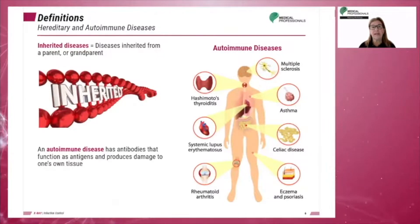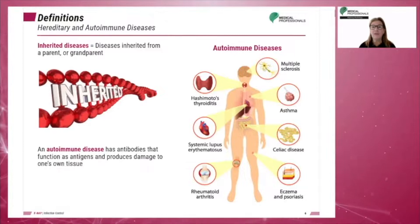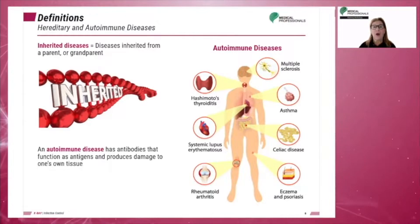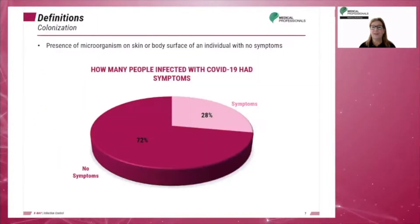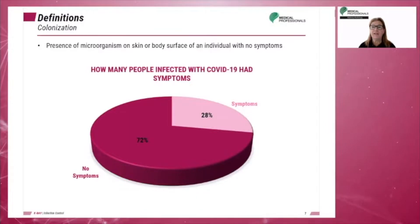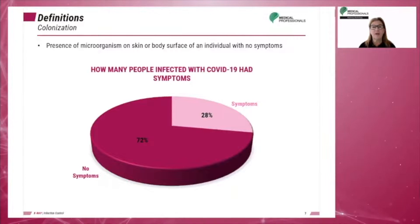Diseases can be inherited from a parent or grandparent — these are inherited diseases. An autoimmune disease has antibodies that function as antigens and damage one's own tissue; rheumatoid arthritis, lupus, and multiple sclerosis are examples. Colonization is the presence of microorganisms on skin or body surfaces with no symptoms. Someone can be colonized and inadvertently spread an infection to others. This infographic shows that almost three-quarters of people infected with coronavirus had no symptoms on the day they were tested.